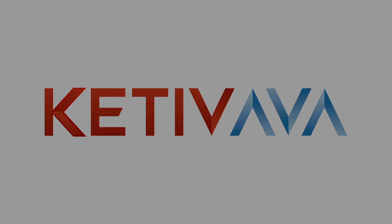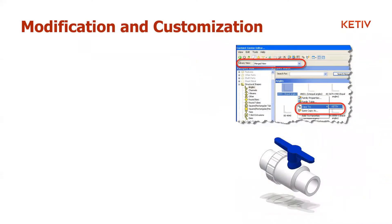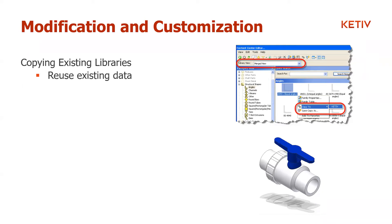When it comes to modifying and customizing your Content Center, you have a couple of choices. The first is to copy existing libraries — this is the easiest way. You're trying to reuse existing data. The bolts I'm going to use aren't any different than what's already in there, but I want to add my own part numbers. It's just information — not modeling — so I want to reuse that data and customize the family table to reflect my custom part numbers.